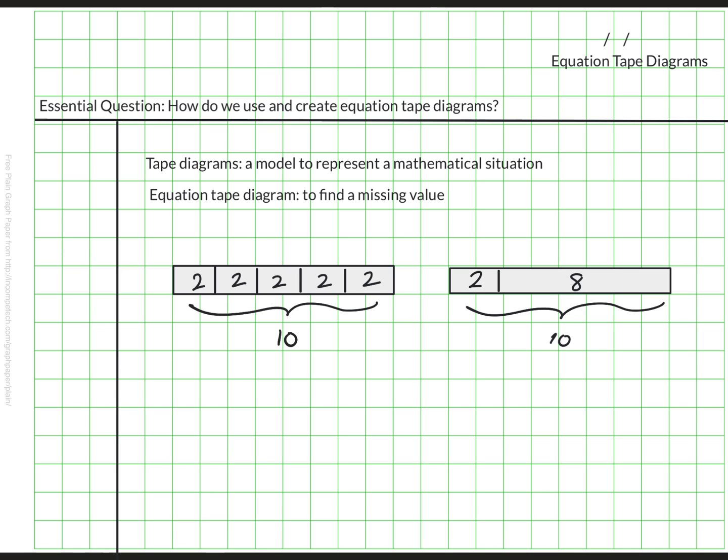Here are two different equation tape diagrams. Each one represents one of these two equations or number sentences. Let's determine which is which. The one on the left is split into five groups and each group has two in each of those little sections. When I look at my two choices, one of them has five groups of two totaling 10. So this matches this tape diagram.